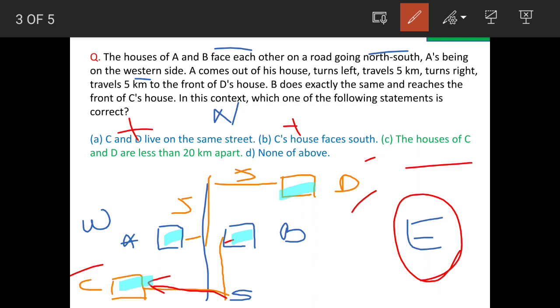The houses of C and D are less than 20 kilometers apart. This is correct because if you see the distances, this is 5 kilometers and this is also 5 kilometers.